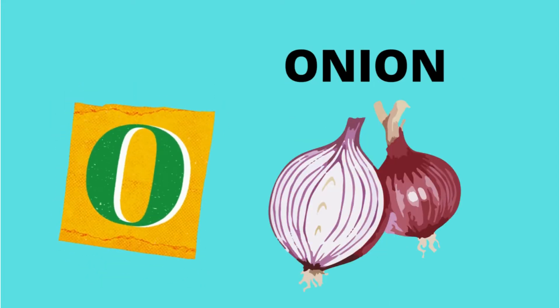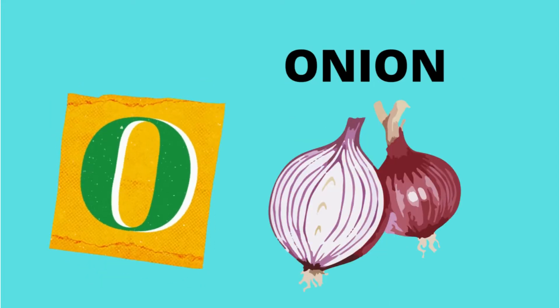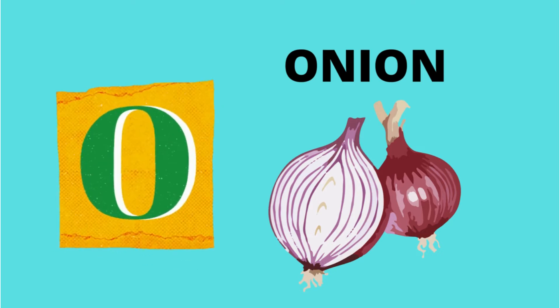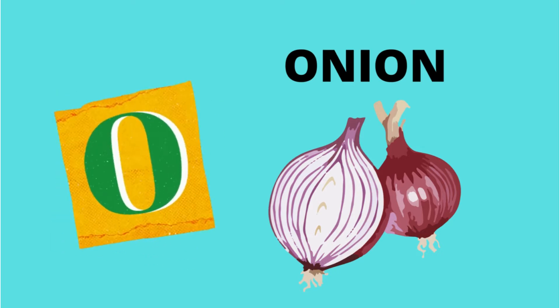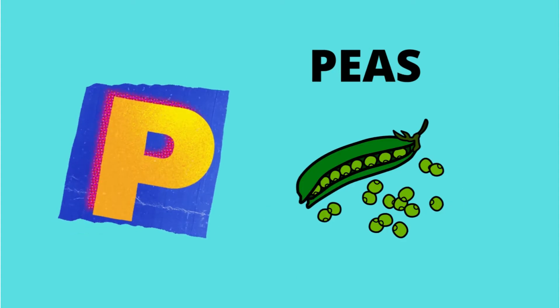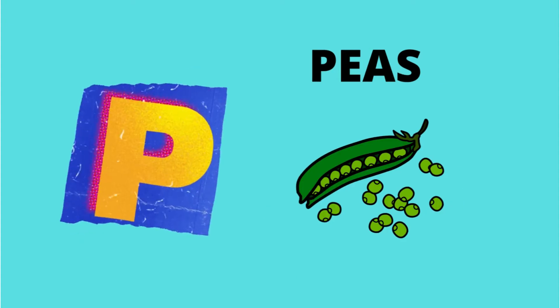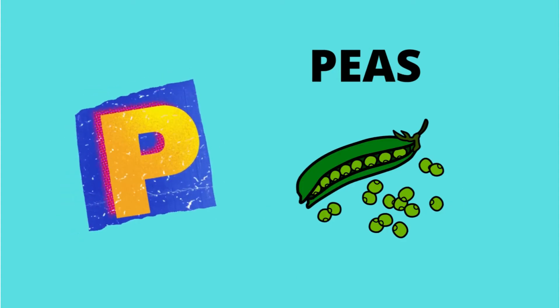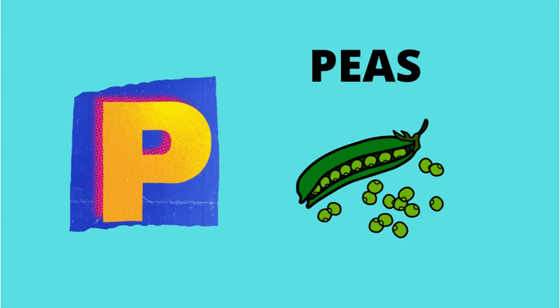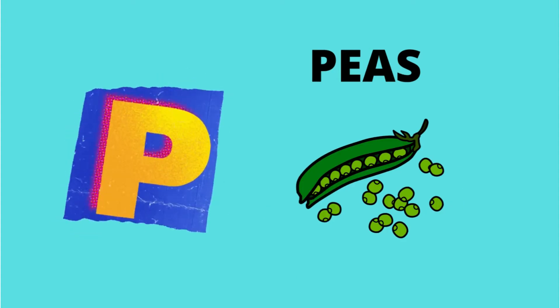O. O is for Onion. Onion. P. P is for Peas. Peas.